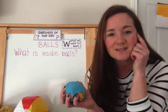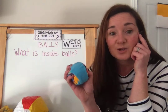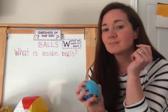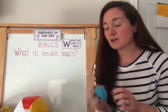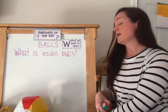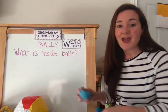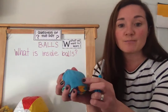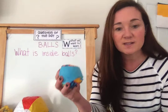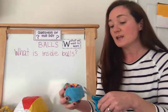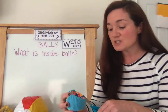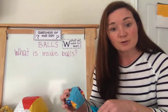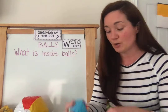So it's soft and it doesn't bounce. What might be inside? Do you think there's air inside this ball like the beach ball? Let's take a look. I'm going to cut the outside cover of the ball off so we can see what's inside. Remember, if you're using scissors you need to make sure that you're with a grown-up so they can help you, because scissors are sharp.